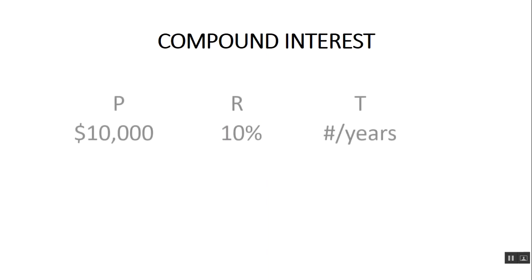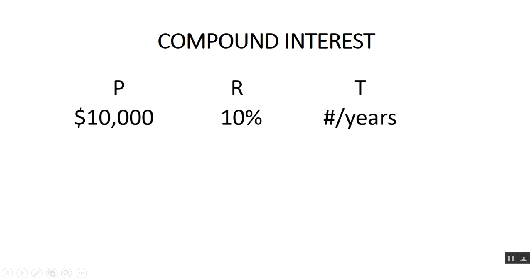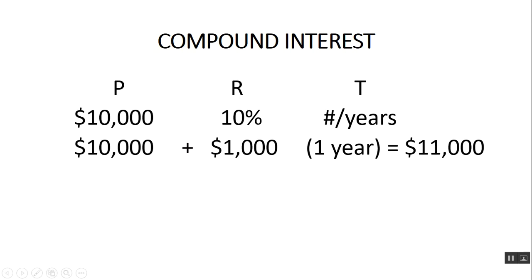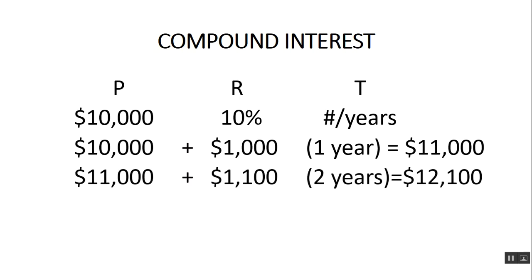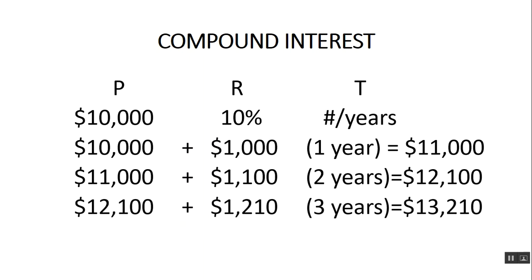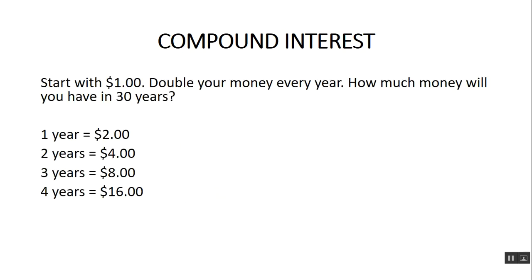Compound interest is interest that is being reinvested and you are earning interest on your interest. So again, using this example: $10,000 after a year is $11,000. But then the following year, you have $12,100 — so you earn an extra $100 because of the compound interest effect. And then the following year, you have $13,210. Your money is growing very rapidly, much quicker than if it was just simple interest.